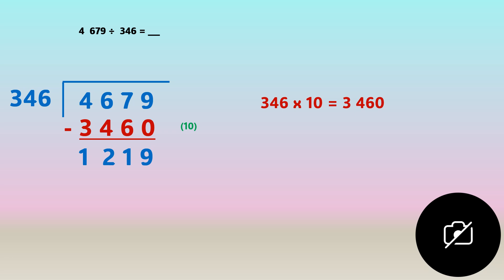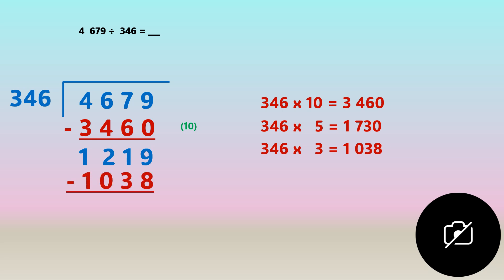We find how many groups of three hundred and forty six go into one thousand two hundred and nineteen. We go to our clue board and multiply by five — the answer is one thousand seven hundred and thirty, which is too large. So we go down and try three. Three hundred and forty six times three is one thousand and thirty eight. We subtract it from that number and write on the side that it goes three times. When we subtract, we're left with one hundred and eighty one.